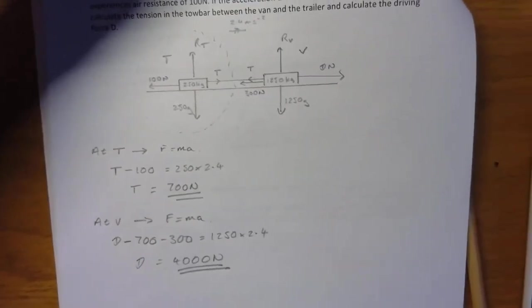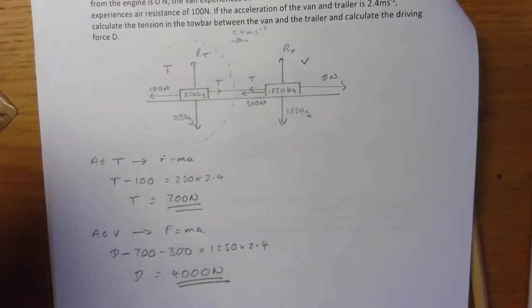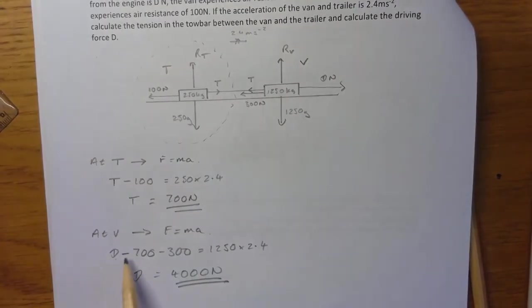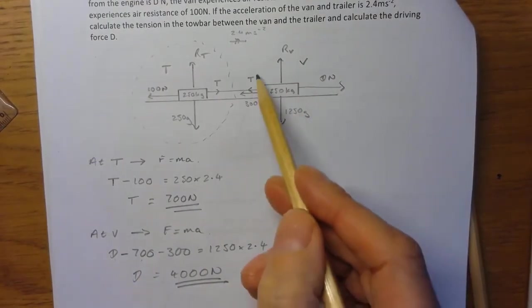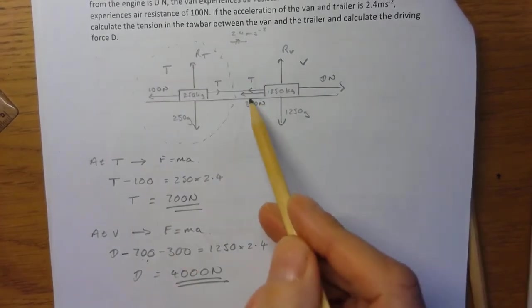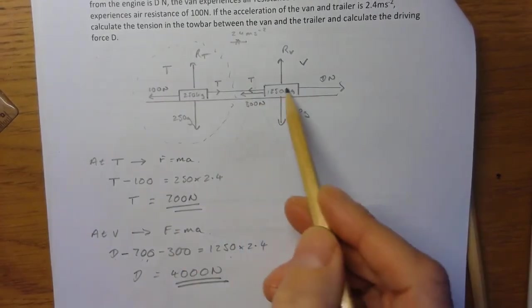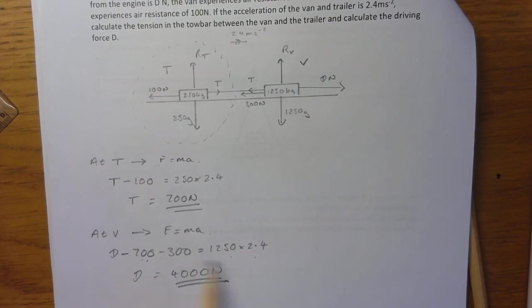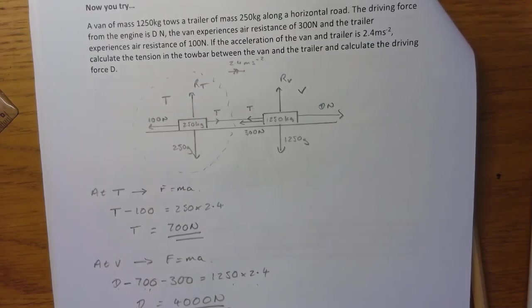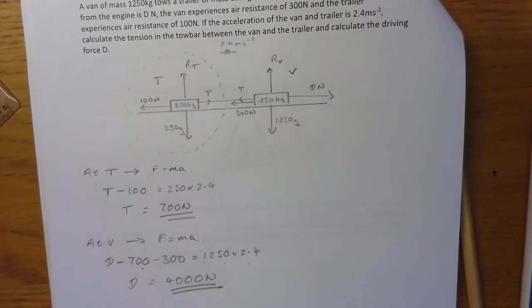Sorry, my apologies, I went off the page there. But you can see what I was doing there: D minus 700, D minus T which is 700, minus 300 equals mass times acceleration. Solve for D. So that's 4000 plus 700. Okay, so that's your solution to that one. I'll see you next time.